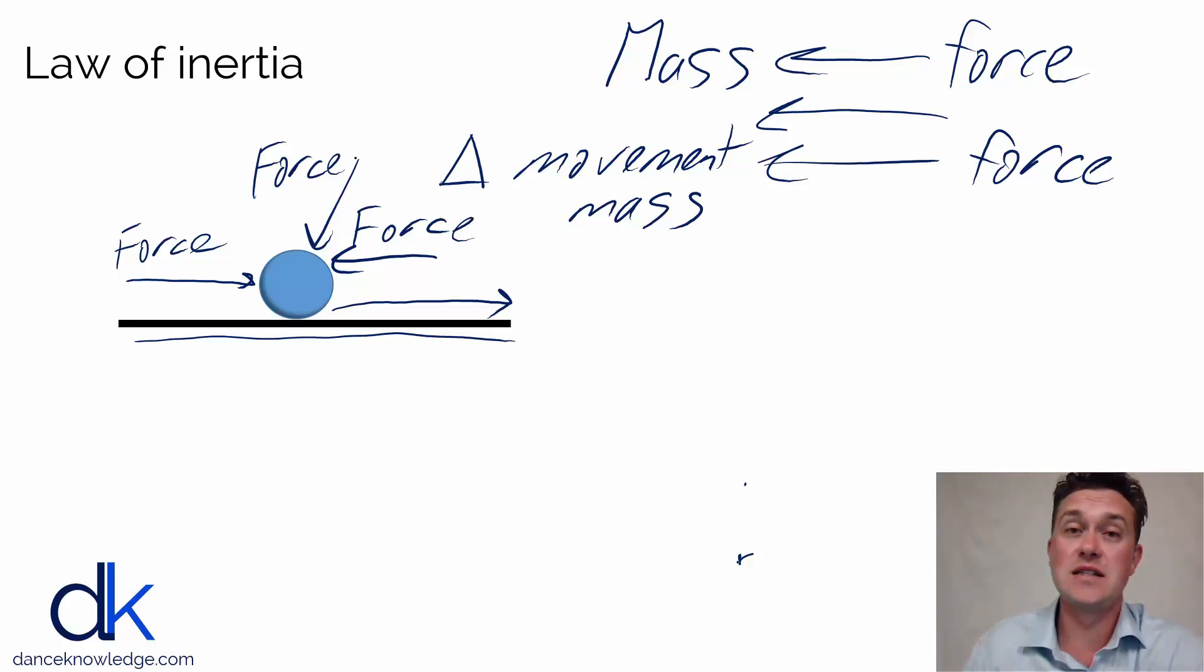Now this is exactly the same for dance. A dancer obviously has mass, and we need forces either from the floor, from gravity, from a barre, or from a partner to enable that dancer to move around in space. Or the dancer might create their own forces using energy within their muscles. But the law of inertia explains that in order for a dancer to move, some sort of force needs to act on the dancer in order for them to move and dance. So it's a really important law.